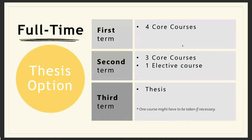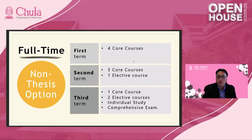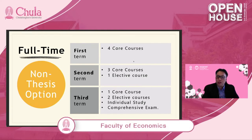Looking at the full-time thesis option: the first term, students take four core courses; the second term, three core courses and one elective course; and the third term, students focus on their thesis. For the non-thesis track third term, students take one core course, two elective courses, complete a mandatory individual study, and then sit the comprehensive exam.